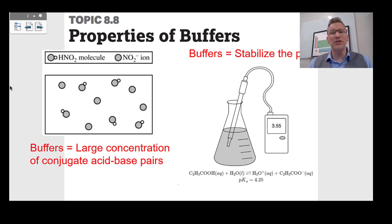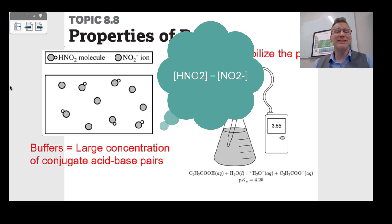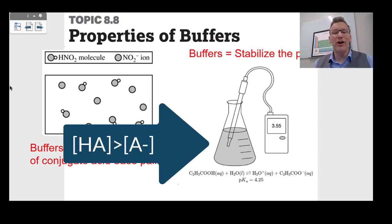Topic 8.8 is properties of buffers. Buffers have a large concentration of conjugate acid-base pairs. Here we have weak acid HNO₂ and conjugate base NO₂−. We have equal particles of each, so this is a perfect buffer with great buffering capacity against acids and bases — meaning the pH equals the pKa. Looking at the example, this buffer's pKa is 4.25, but our pH is a little bit lower, which means we have more of the weak acid HNO₂ than the conjugate base NO₂−.